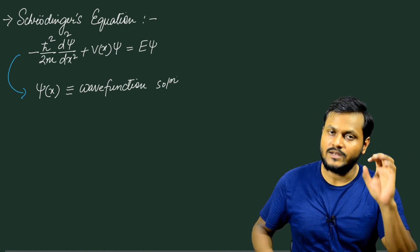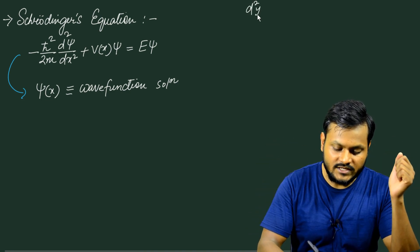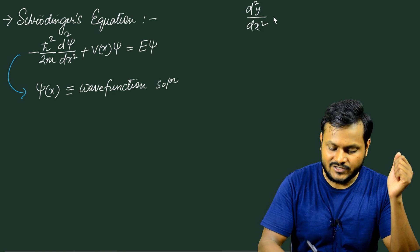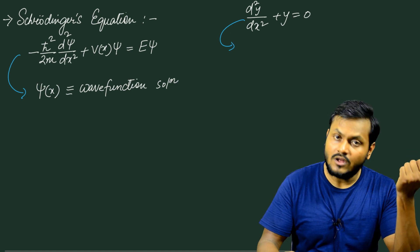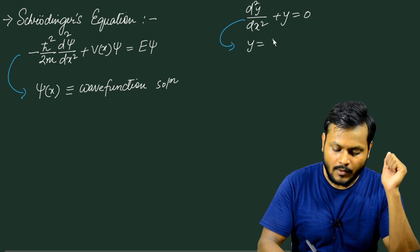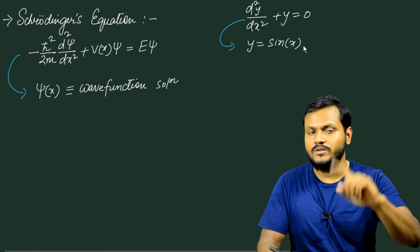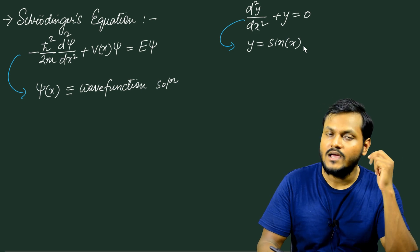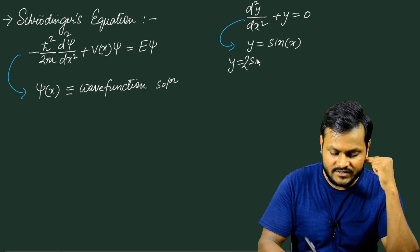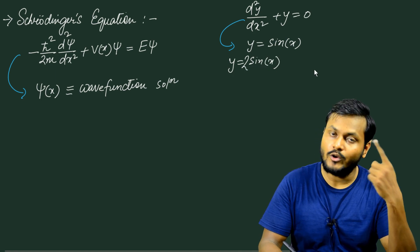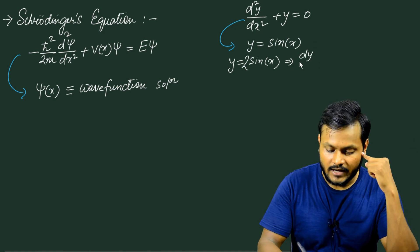Let me give you a simple example. Consider the second-order differential equation d²y/dx² + y = 0. If you solve it, the solution comes out to be y = sin(x). Now if I multiply this solution with a constant, the new function is also going to be a solution. So if I say y = 2 sin(x), this is also a solution of the differential equation.